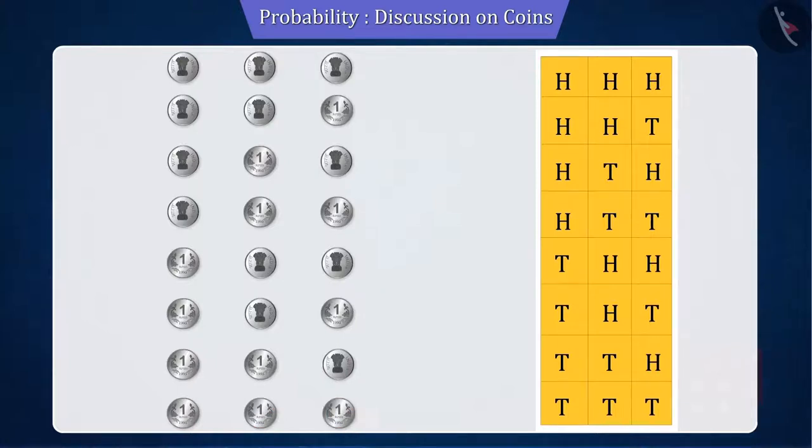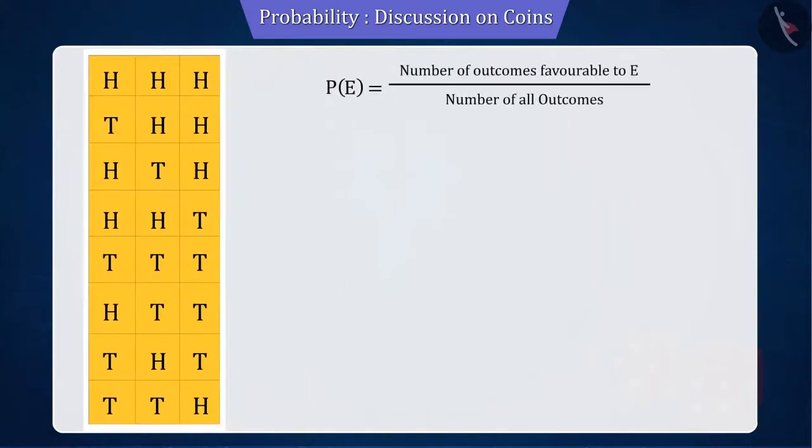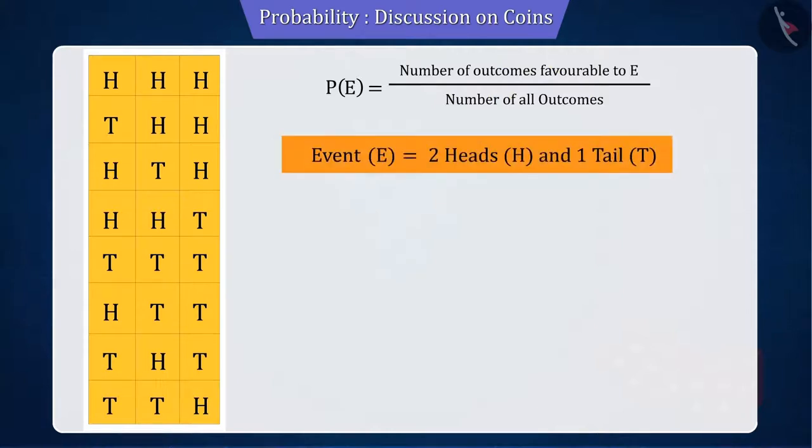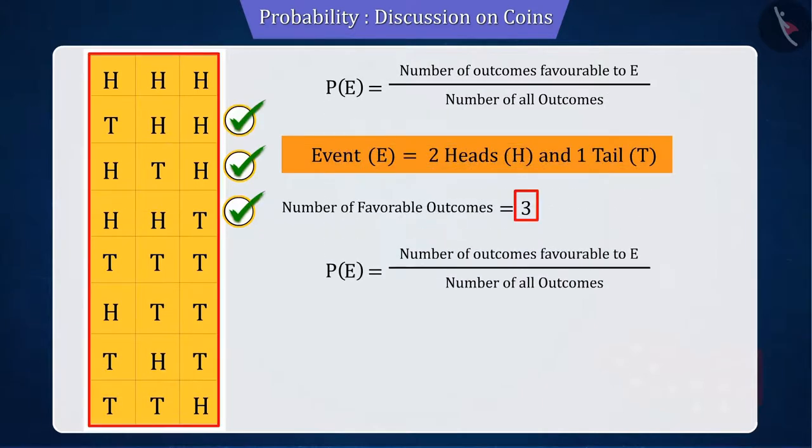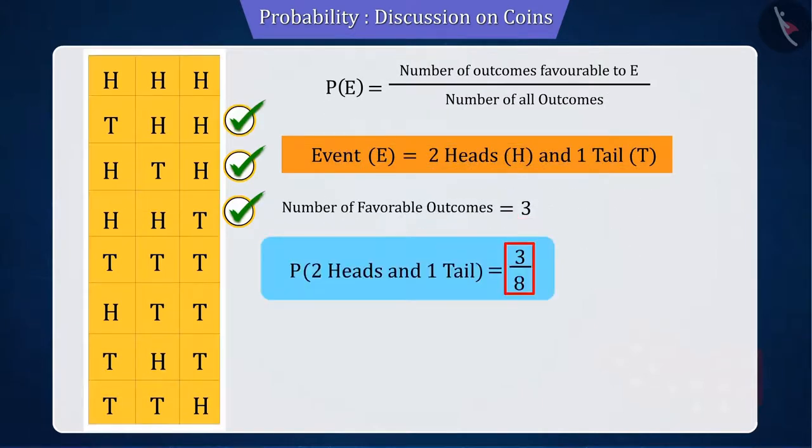Let us obtain the maximum possibility from the results obtained. In the probability formula, replace the value of the number of favorable outcomes of the event and the number of possible outcomes. Here, the three outcomes with exactly two heads and one tail are head-head-tail, head-tail-head, and tail-head-head, the probability of which is 3 by 8.